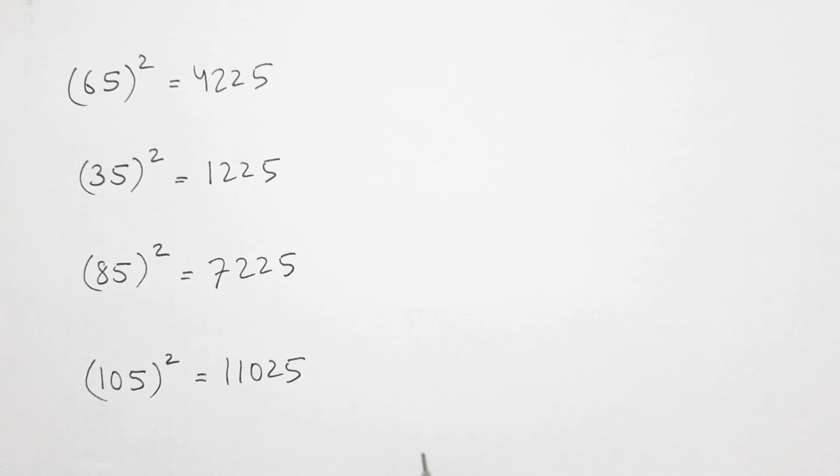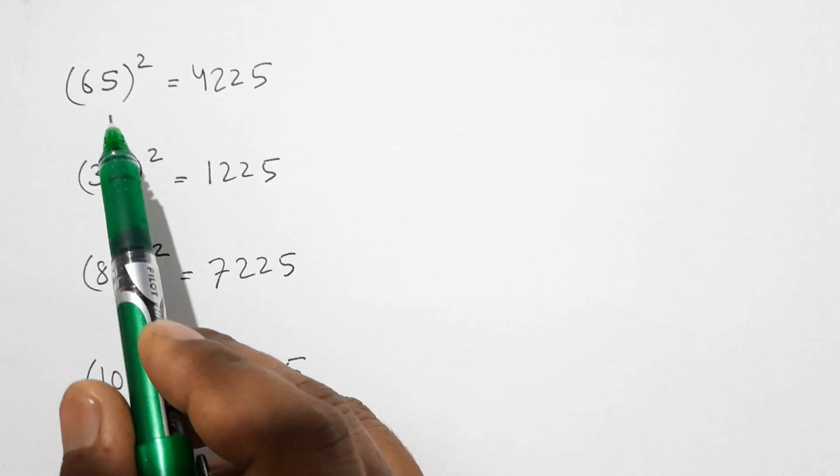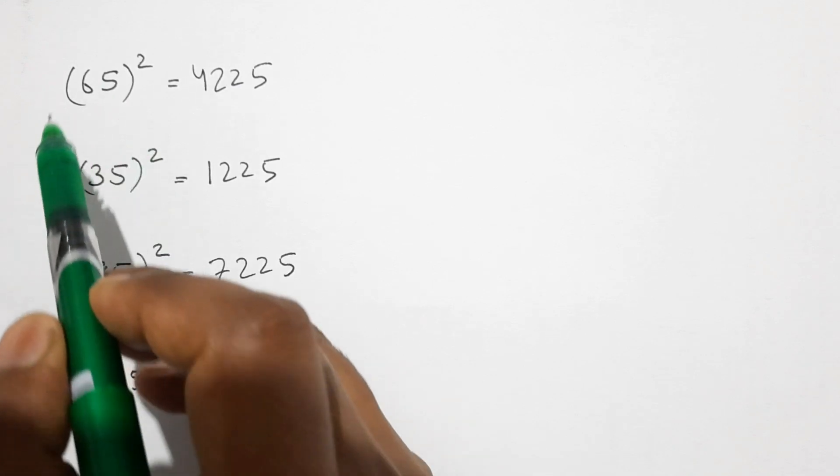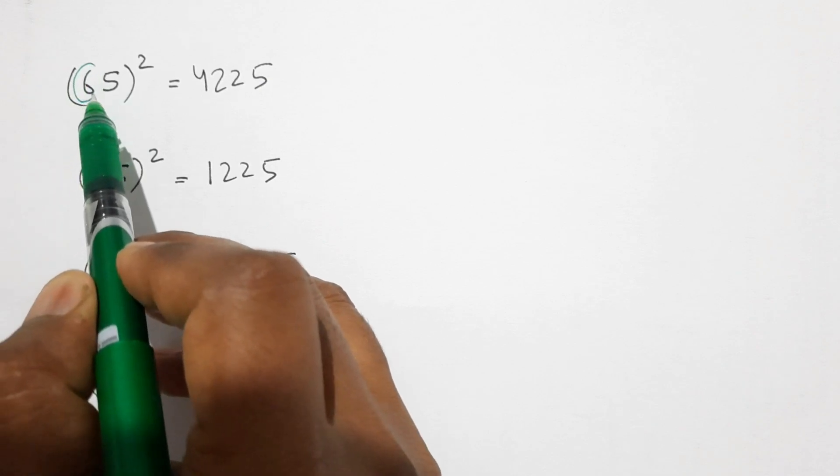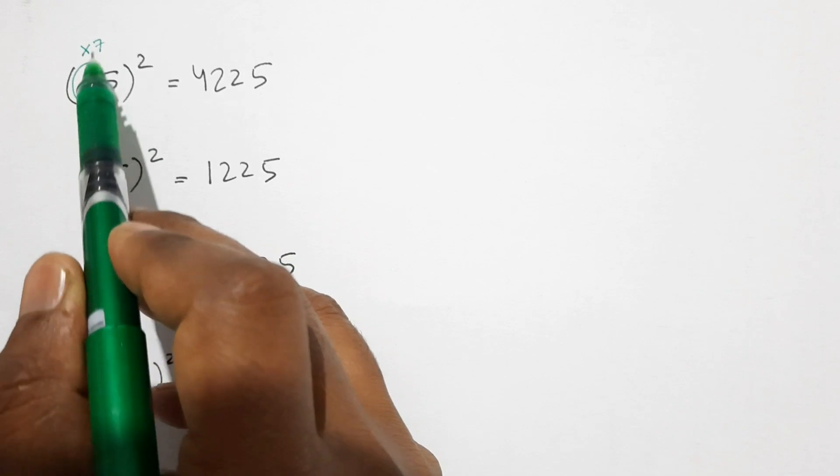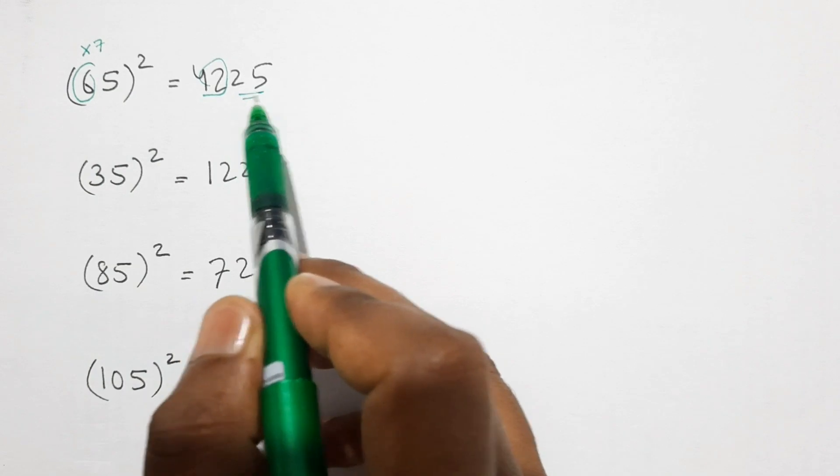So how I did? Let's learn the trick. To find the square of any number ending with digit 5, what we have to do is first we have to multiply this 6 with the number 1 more than 6, that is 6 times 7 equals 42, then the square of 5 which is 25.